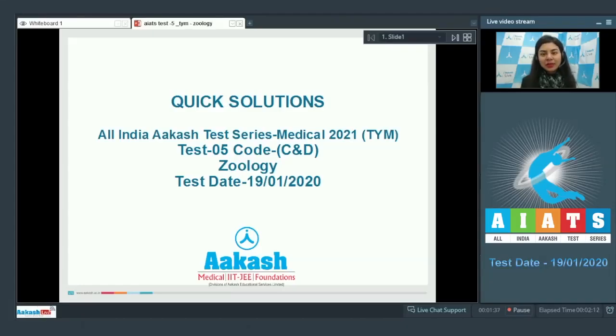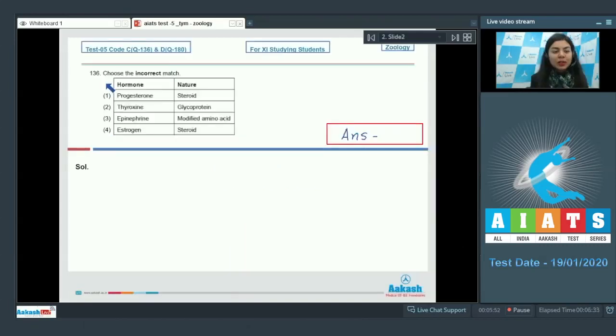Welcome students to the quick solutions of the All India Akash Test Series. This is test number five, Zoology code CND, and this test took place on 19th of January 2020. Let's get started with our first question, question number 136.